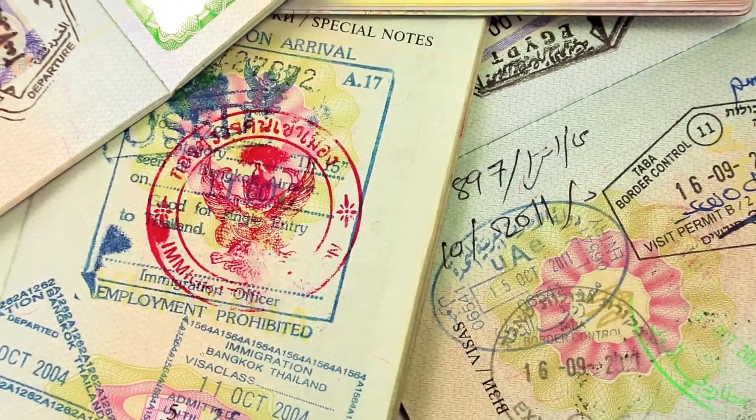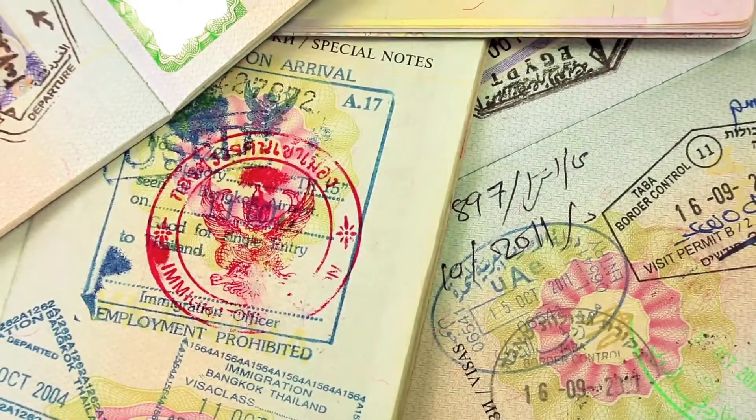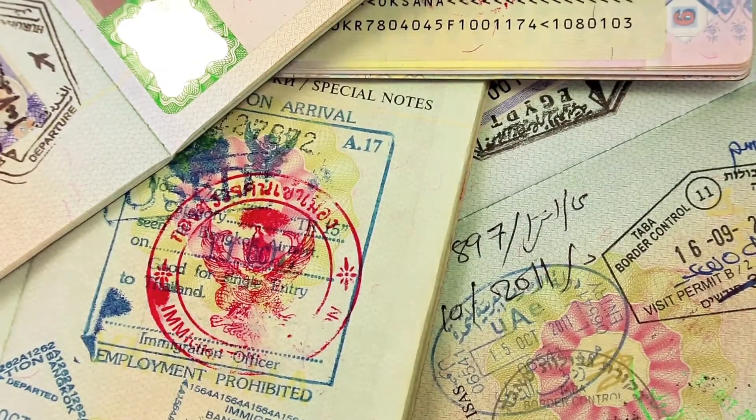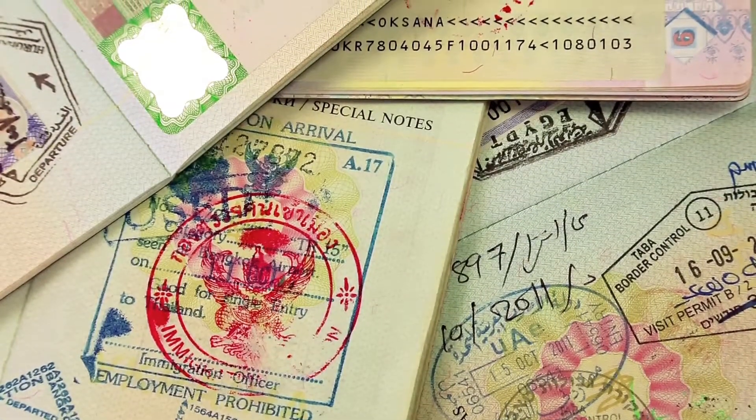Securities fraud, often called stock fraud, happens when a stockbroker or other person involved in the sale of stocks convinces an investor to purchase stocks on the basis of deceptive information or acts.